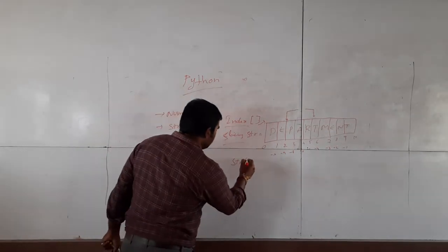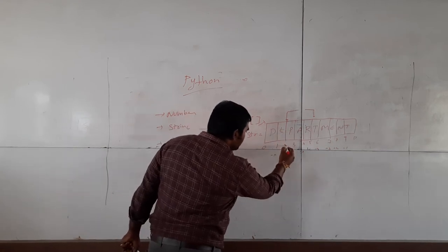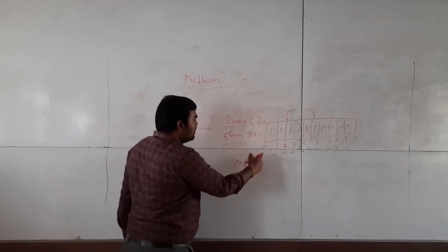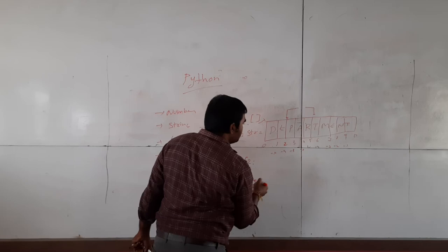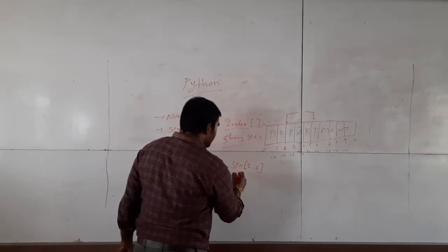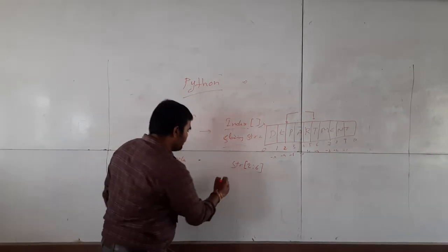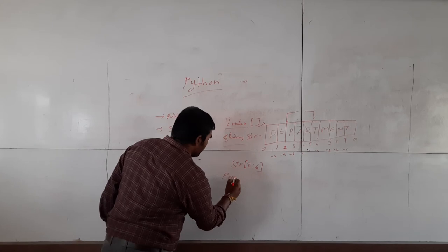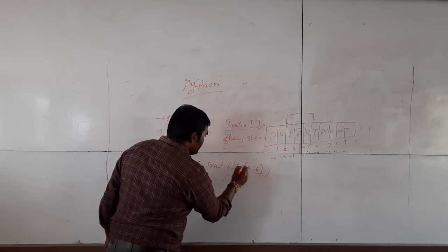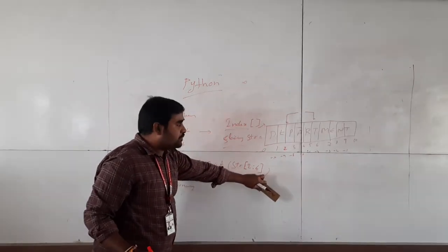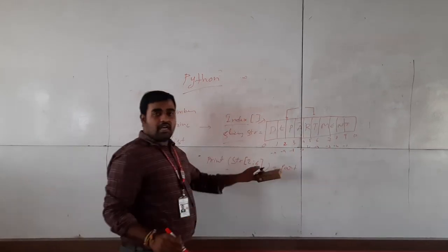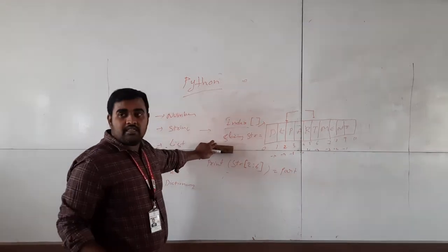Suppose if I want to extract only 'part', using the index operator — that is square brackets — starting from index 2, using the slicing operator, up to index 6: str[2:6]. The result is 'part'. If you want to print this value using the print statement: print(str[2:6]) — the result is 'part'. This is the slicing and indexing concept.